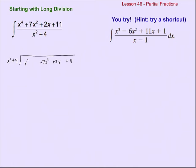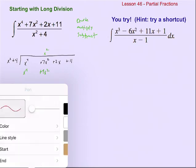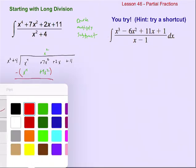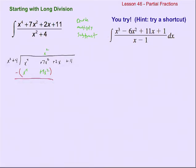The long division process: first you divide, then you multiply, then you subtract, and repeat. First step: x to the fourth divided by x squared is x squared. Line up the terms. Then multiply x squared times x squared plus 4, which gives x to the fourth plus 4x squared. Subtract — the x to the fourth cancels and we're left with 3x squared. Bring down what's left: 2x plus 11, and start over.